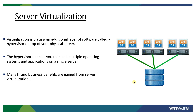If you have high-end hardware, you install an ESXi host or hypervisor, and on top of it you create multiple virtual machines with different operating systems. Virtualization is placing an additional layer of software called a hypervisor on top of your physical server. Once ESXi installation is completed, the hypervisor enables you to install multiple operating systems and applications on a single server.